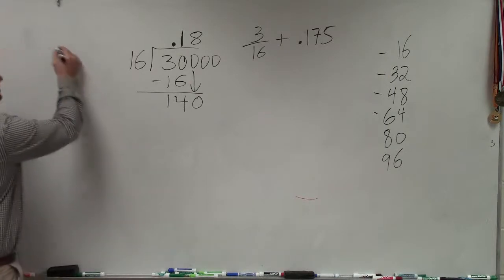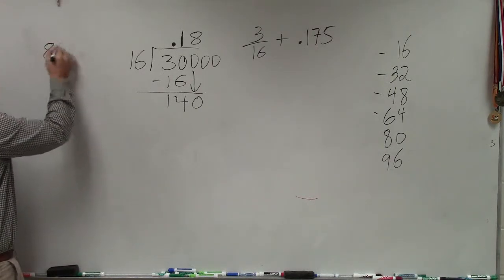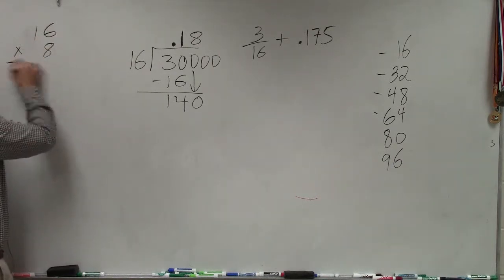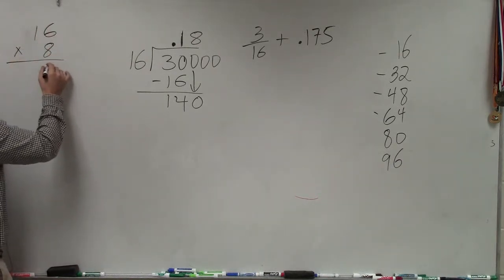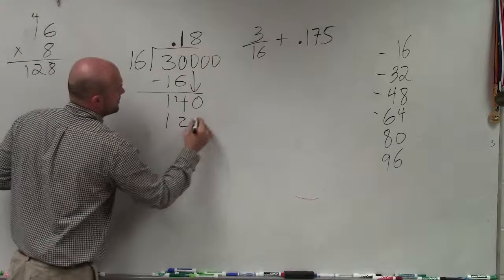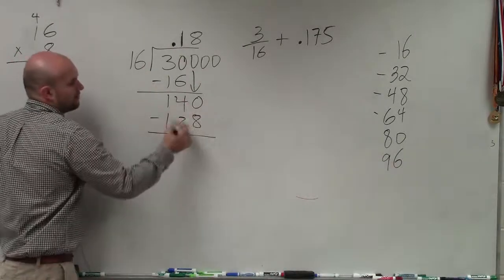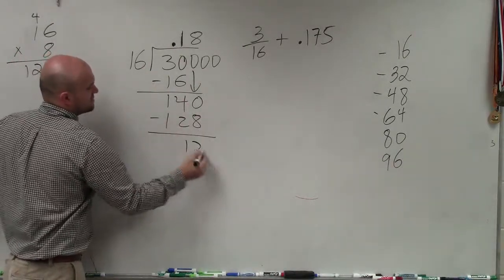Now let's check our work. Make sure we did that correctly. 8 times 16. 8 times 6 is 48 times 4. 8 times 4, 128. Yes, that works, right? So then I put 128 down here, and I subtract. 140 minus 128 is going to be 12.